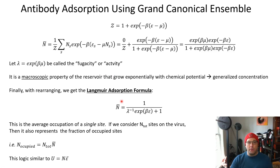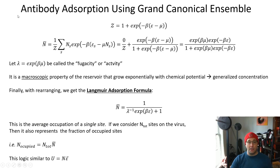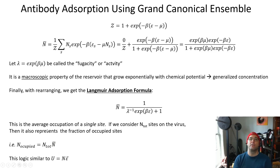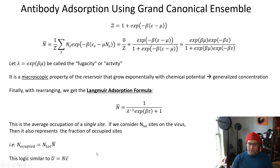After rearranging, we get n̄ = 1 / (λ⁻¹ · e^{+βε} + 1). This is the average occupation of a single site. If we have N_total sites on the virus, the number of occupied sites is N_total times this average value — so n̄ is actually the fraction of sites on the virus that is covered, analogous to how total energy in the canonical ensemble is N times ē.